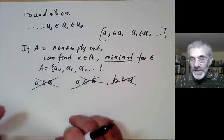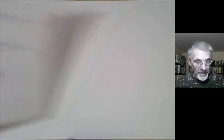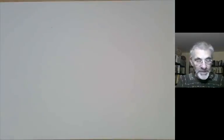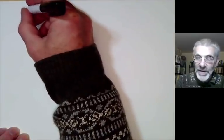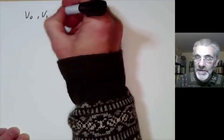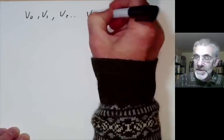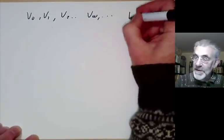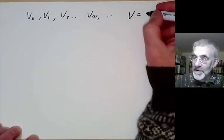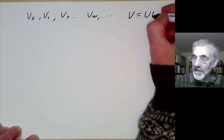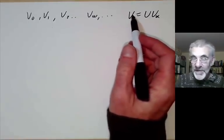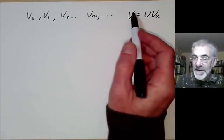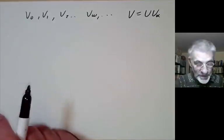So what's the axiom of foundation good for? Well, the main application is when we have the von Neumann hierarchy V0, V1, V2, Vω and so on. You can take V, the von Neumann universe, to be the union of all the Vα, and the axiom of foundation more or less says that every set is in the von Neumann universe.